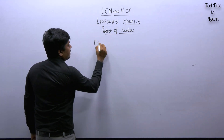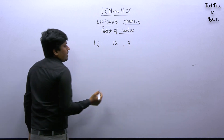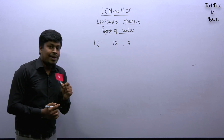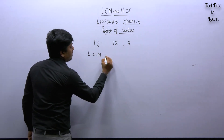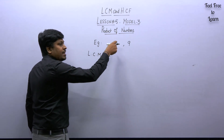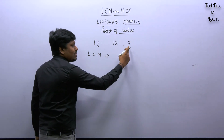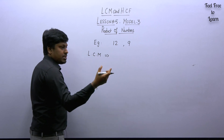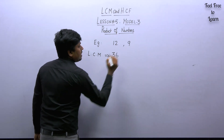Let me use the example question with numbers 12 and 9. The question is: find the LCM and HCF for the numbers 12 and 9. First, let me find the LCM for 12 and 9. The shortcut: take the largest number, which is 12, and check whether it is divisible by the remaining numbers. 12 is not divisible by 9. Multiply: 12×2=24, not divisible by 9. 12×3=36, and 36 is divisible by 9. So LCM is 36.